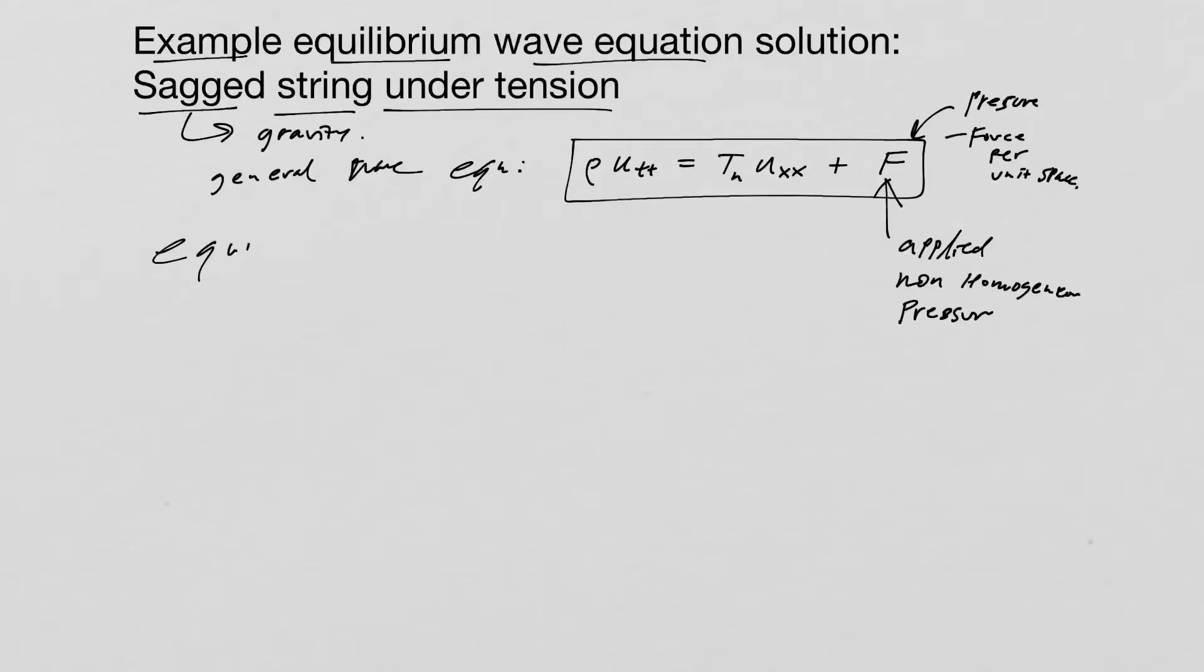We're looking at equilibrium, which means there's going to be no acceleration. So we're going to have u_tt is equal to zero.